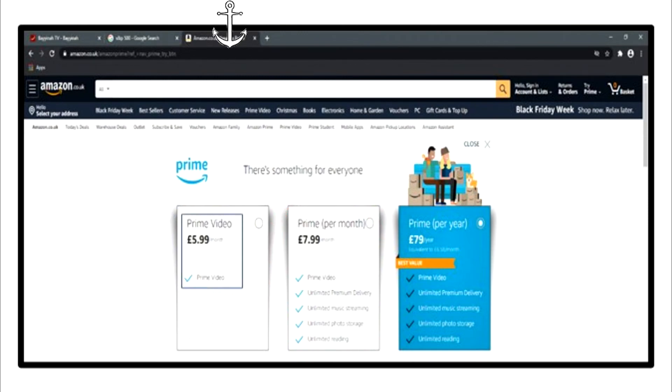The first option is the anchor. It sets the seed in your mind that Prime Video is actually worth $5.99. You then look at the second option and believe that you're getting unlimited delivery, music, photo storage and reading for only an extra £2. This makes the second option look like a great deal.